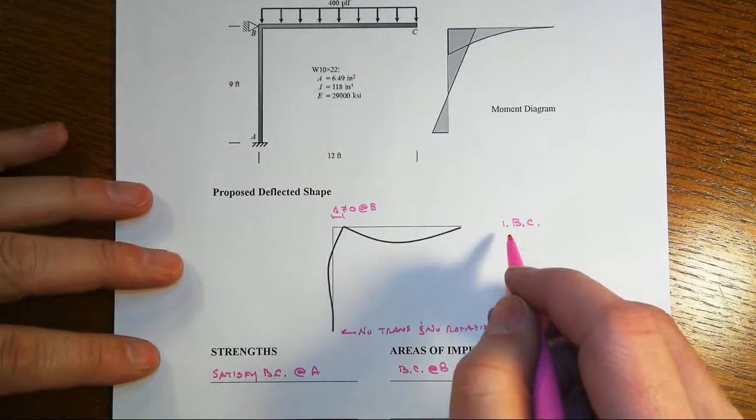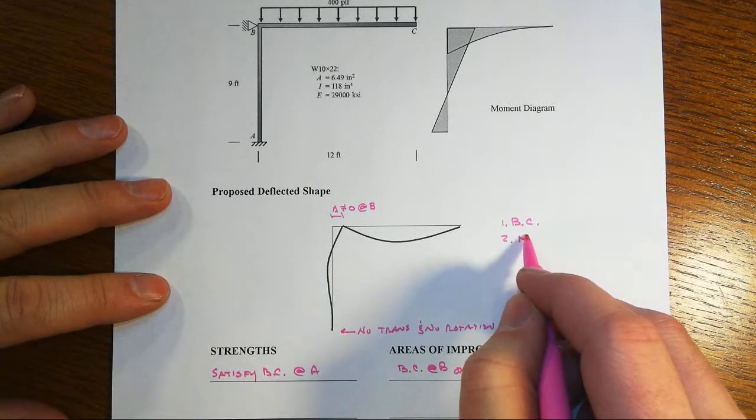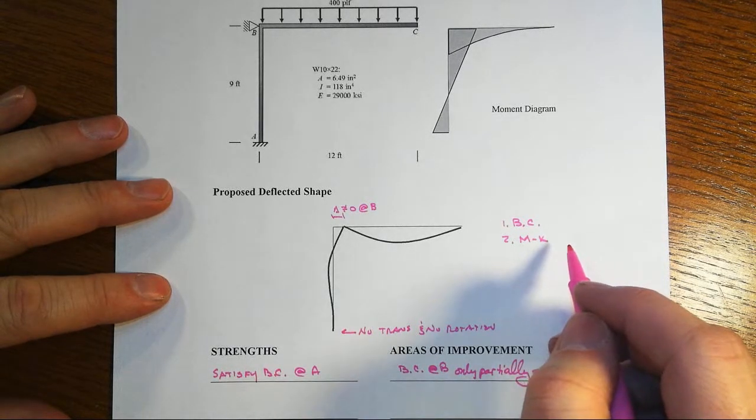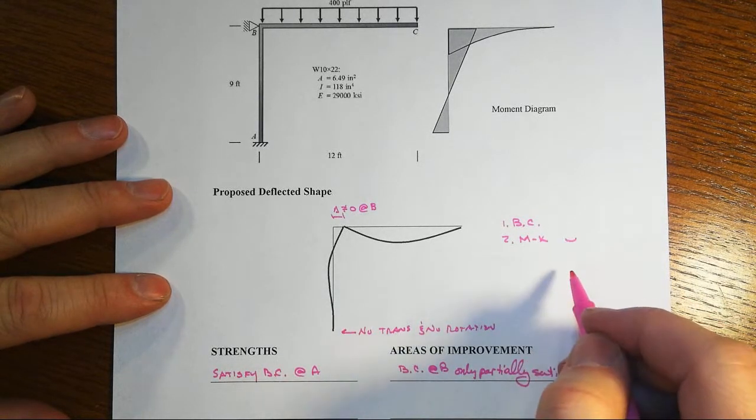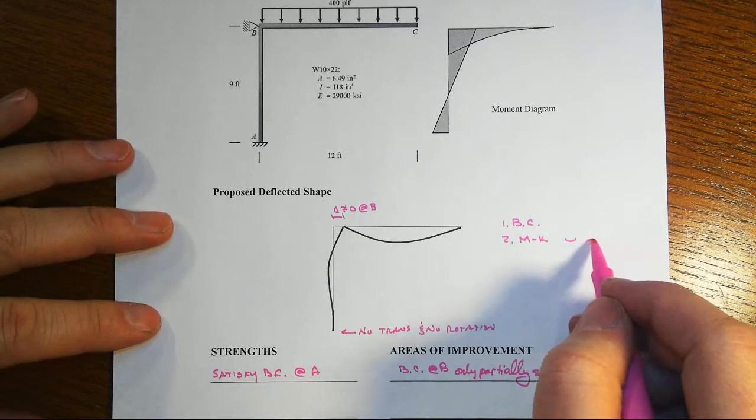We have no boundary conditions out here at C, so we won't go anywhere with that. We also of course need to meet moment curvature relationship, so that means that on the compression side of things we've got the concave either up or concave down.